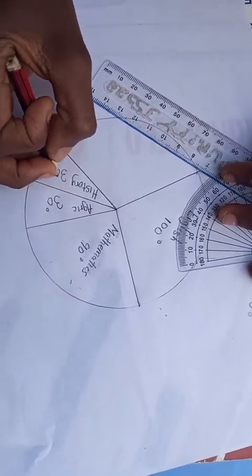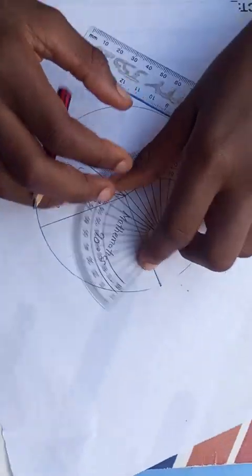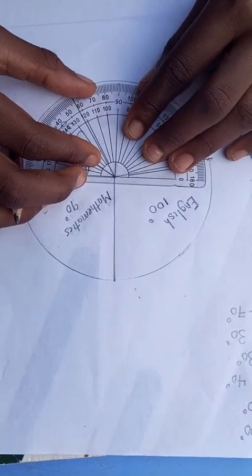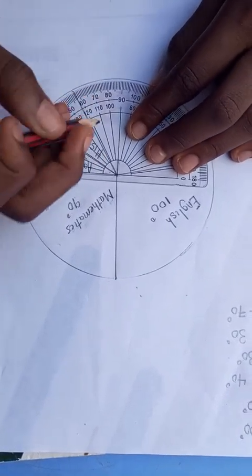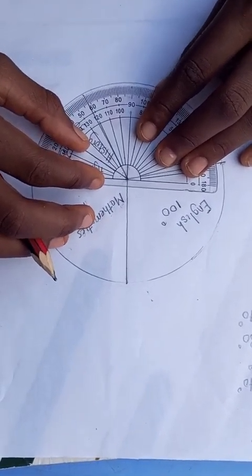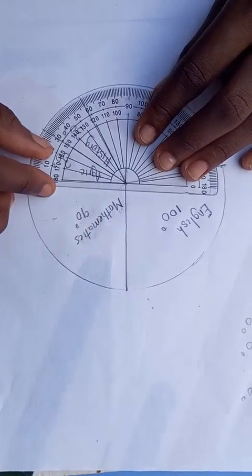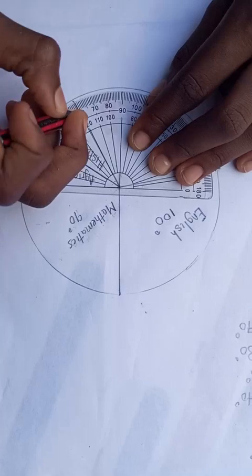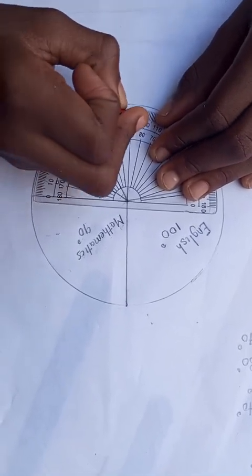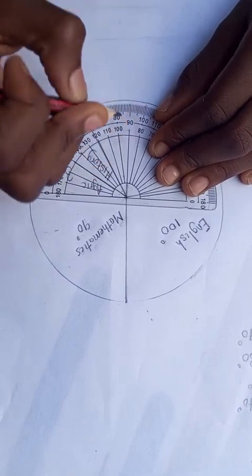And biology, which is 40 degrees. This line is straight, make sure it should be straight. So 10, 20, 30, 40. This is 40 degrees.